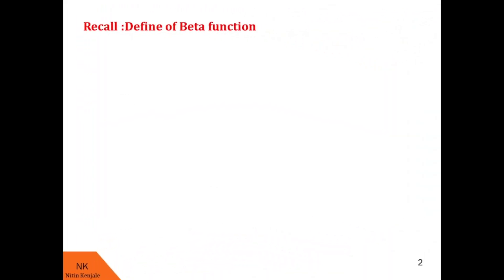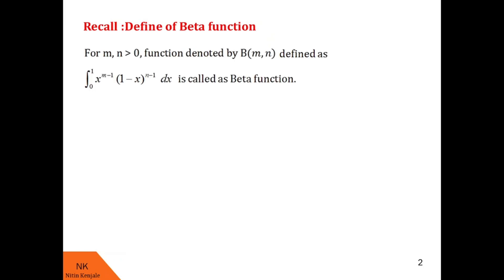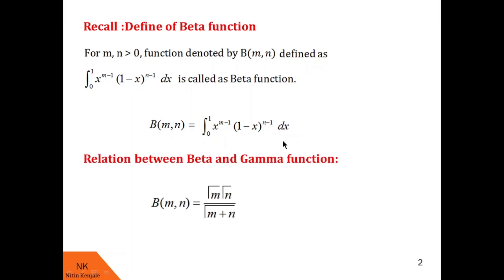Let us first recall the definition of beta function. For m, n greater than 0, we define beta of m, n as the integral of x raised to m minus 1 into 1 minus x raised to n minus 1, dx over the limit 0 to 1. Now let us recall the relation between beta and gamma function: beta of m, n is equal to gamma of m into gamma of n upon gamma of m plus n.